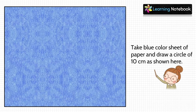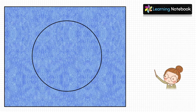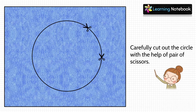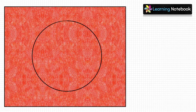In the next step, take a blue colored sheet and draw a circle of 10 centimeters on it, then cut out this circle with the help of a pair of scissors. Next, take the red colored sheet, draw a circle of 5 centimeters on it, and cut out this circle.